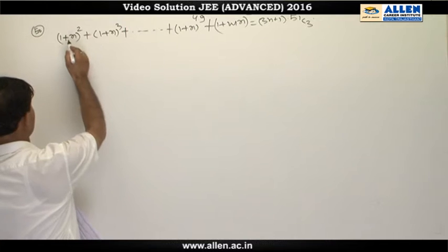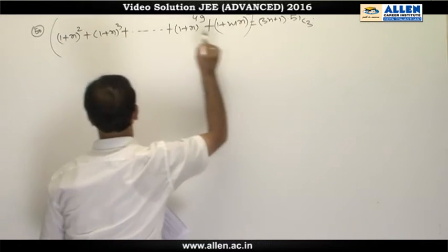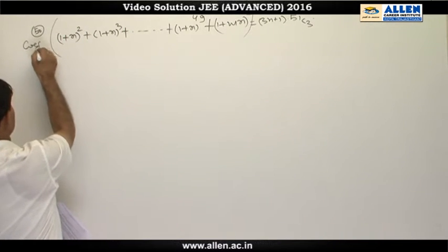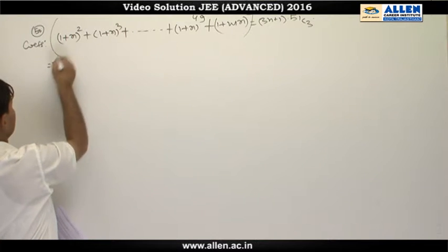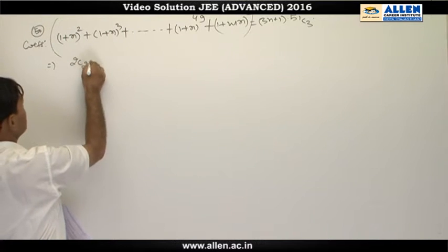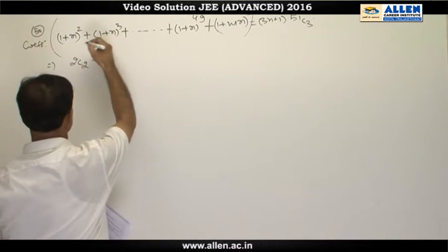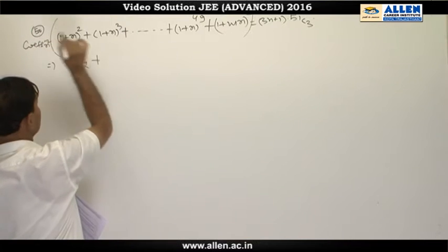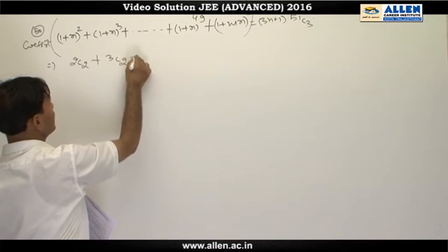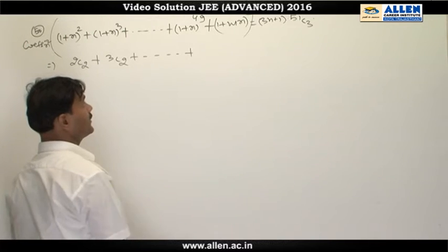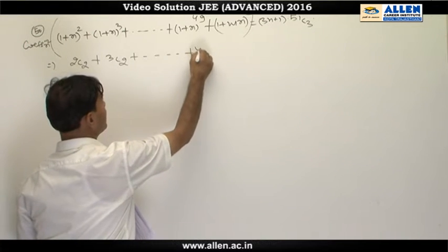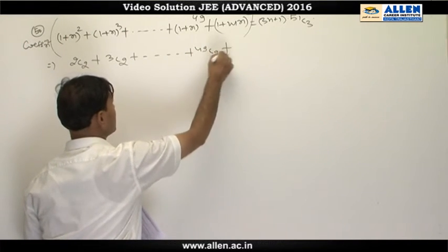Now coefficient of x² from this expression will be 2C2 from this term, coefficient of x² will be 3C2, continuing in the same manner here coefficient of x² will be 49C2 plus